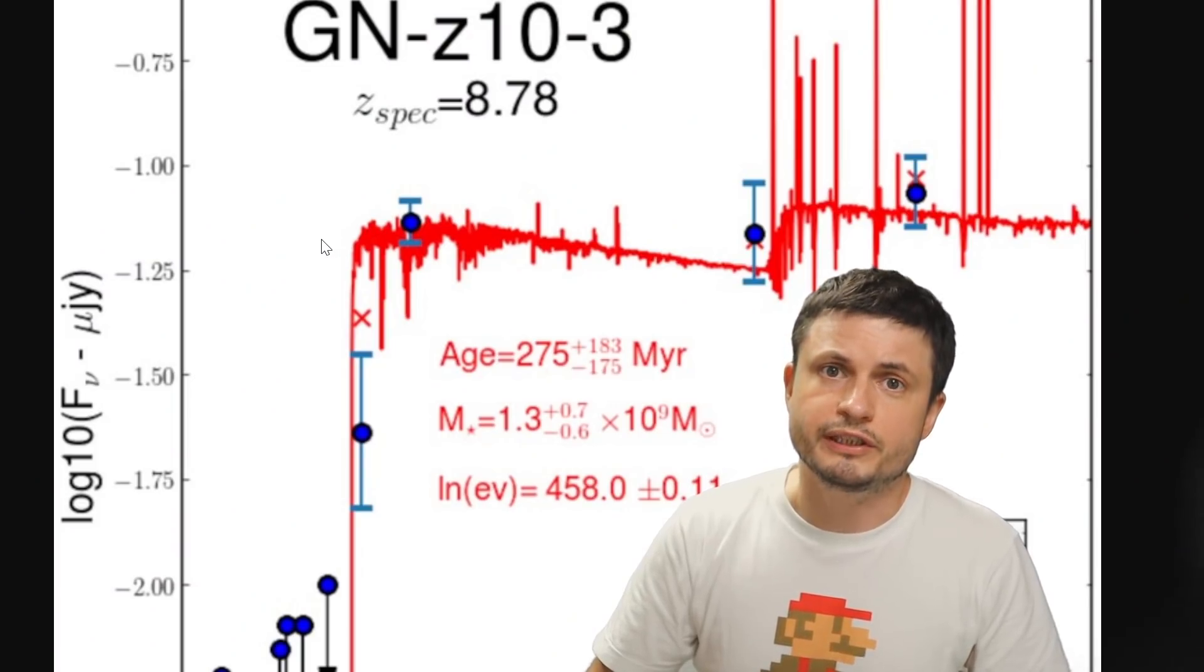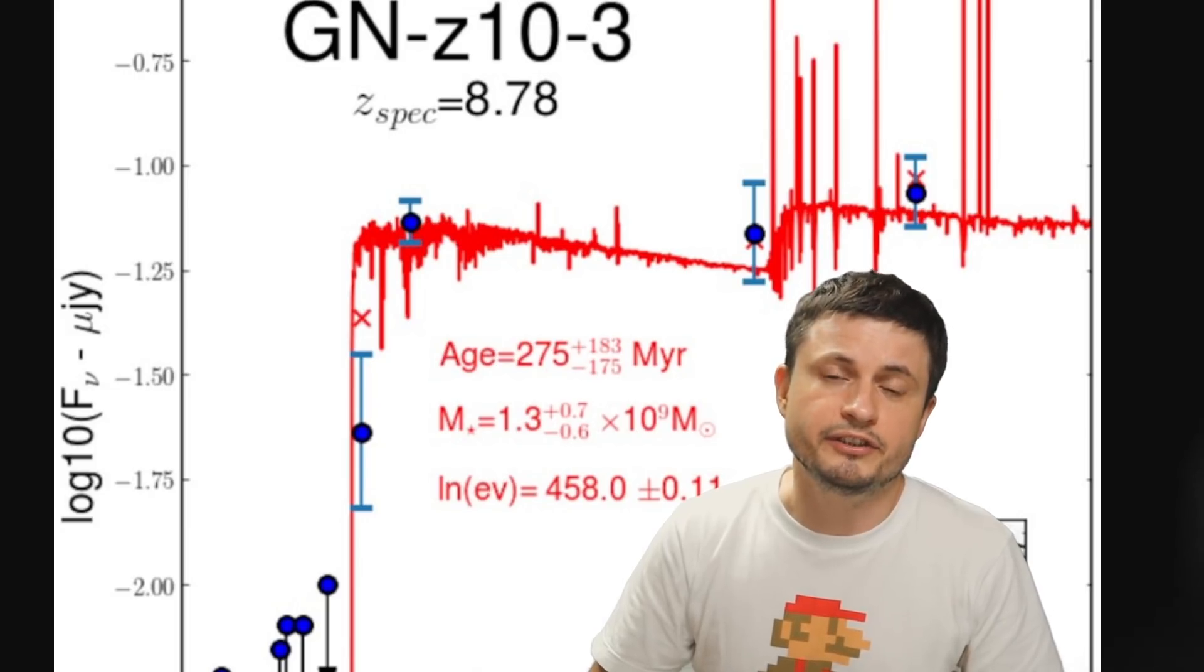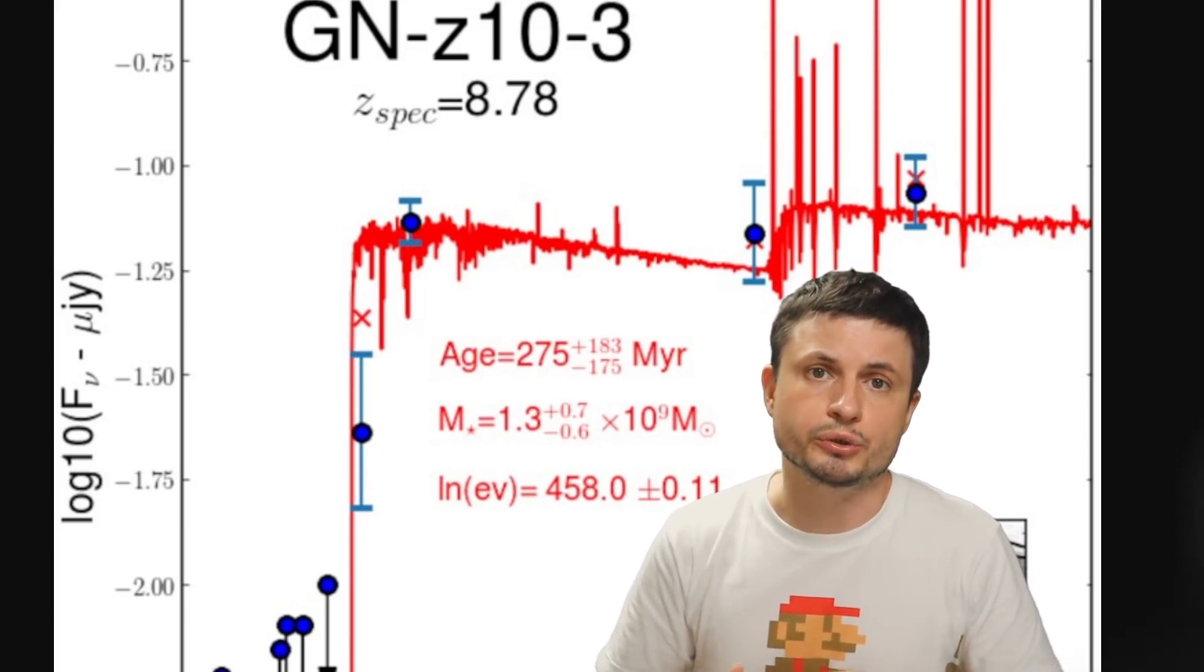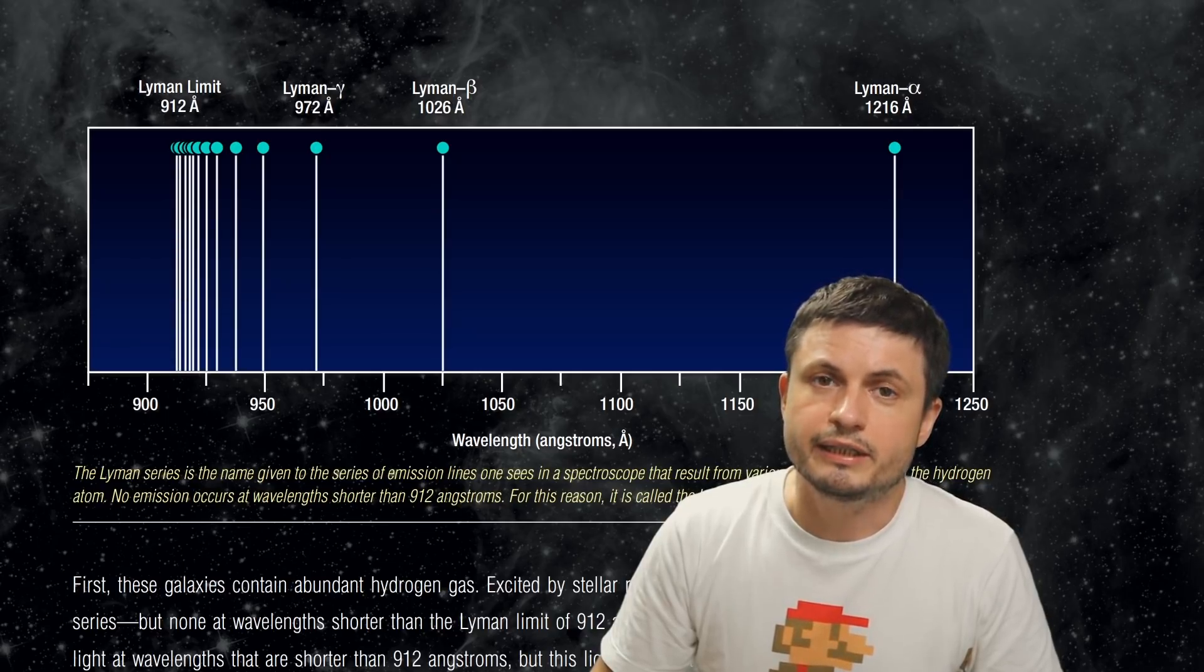And so in pretty much all of these really distant galaxies, this higher energy is completely invisible. It's absorbed by the neutral hydrogen gas. And this break is, of course, right at this limit right here, the Lyman limit.